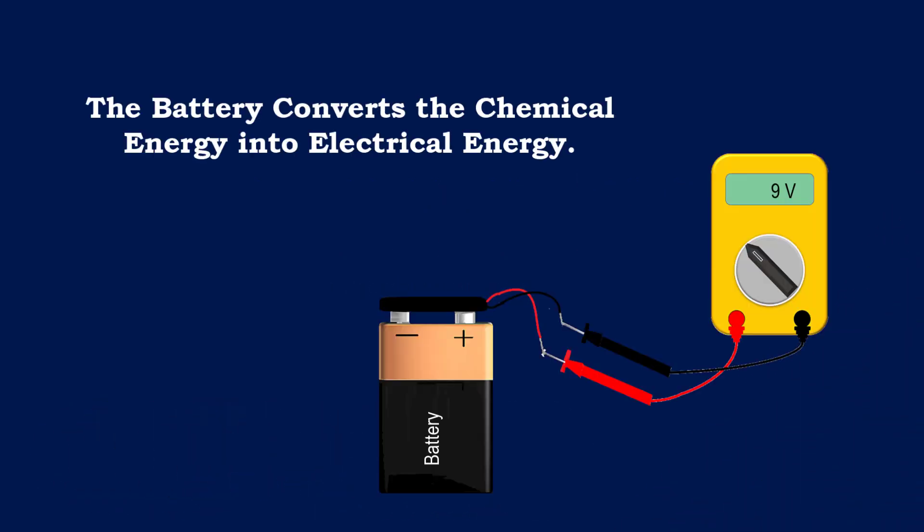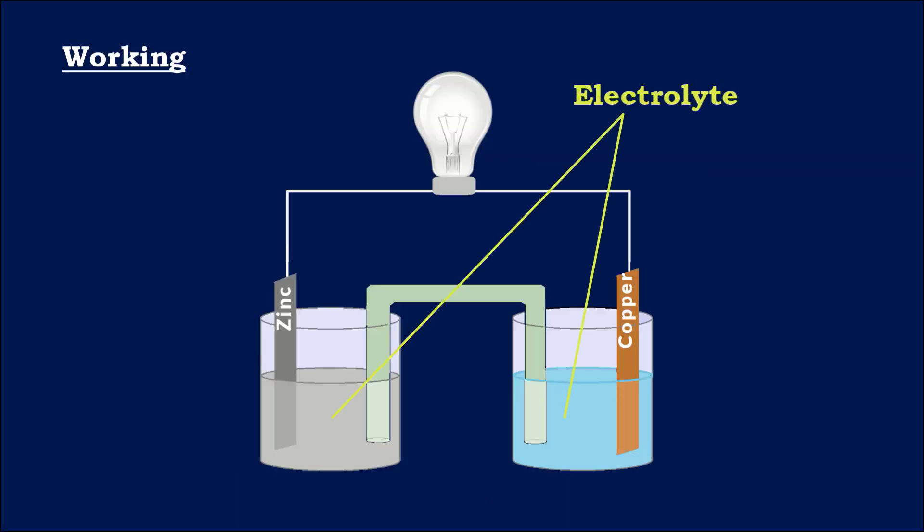Batteries are compact devices that store and release electrical energy. It consists of an electrolyte material and two electrodes. One is called anode, and the other is called cathode.